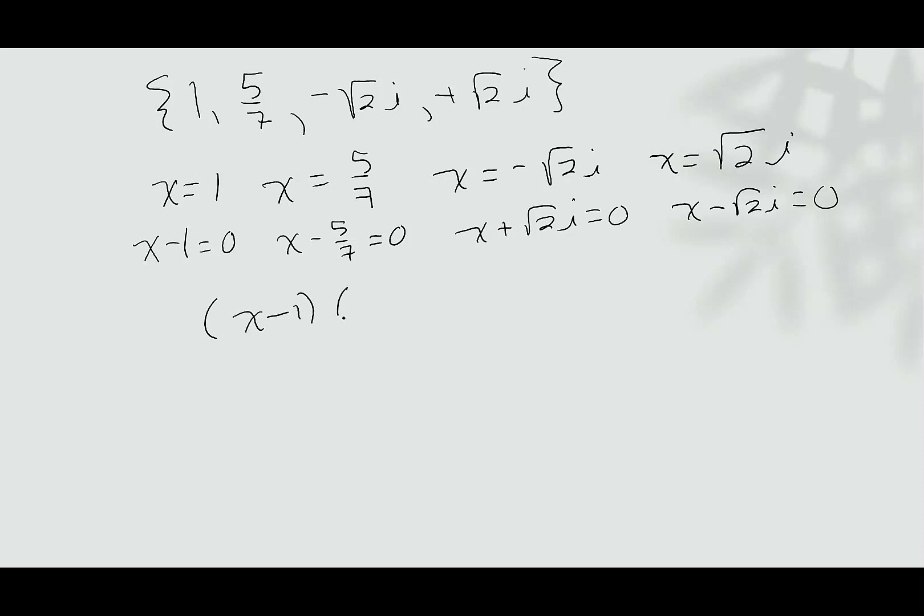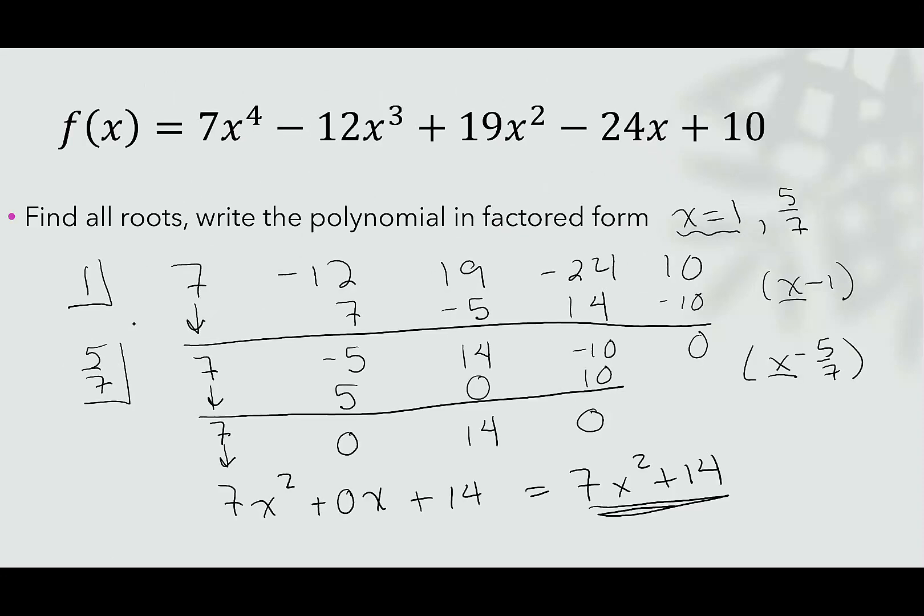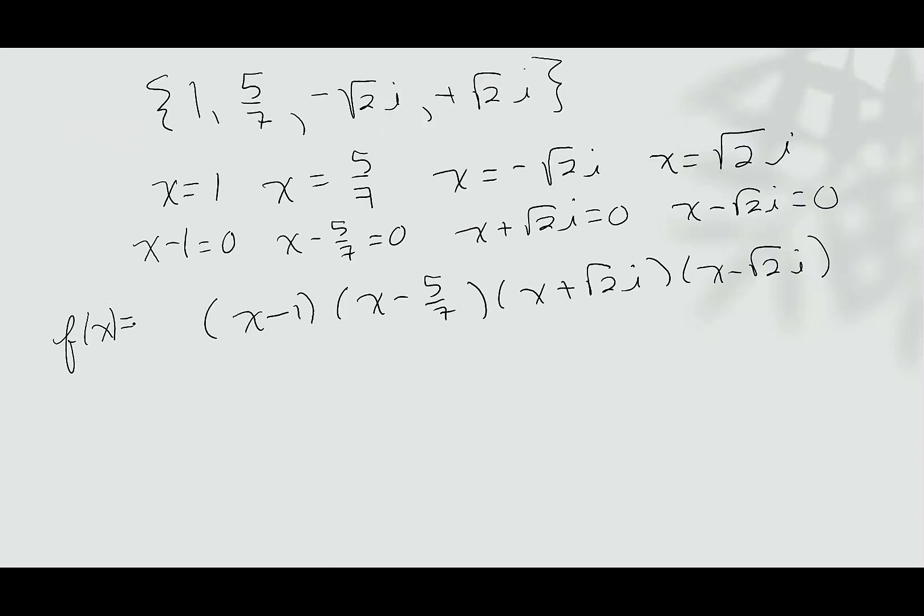We have (x - 1)(x - 5/7)(x + √(2i))(x - √(2i)). The last thing we need to do is a quick check to make sure our leading term would be equal to what we had in our original function. Originally, we were given that f(x) was 7x^4. If we think about multiplying out this polynomial, we would only have x^4. I need to put a 7 in front to match our leading coefficient.